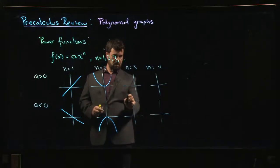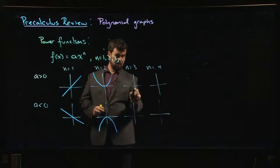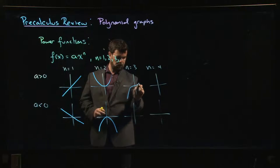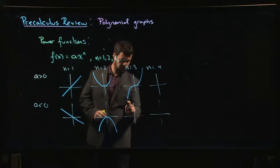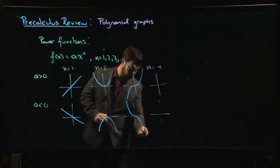n equals 3, your basic cubic looks like this. It starts negative, it's going to flatten out as it passes through the origin and then head up. So it's going to look like this. And if a is negative, same thing but flipped.